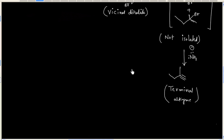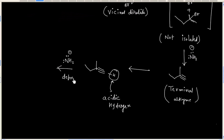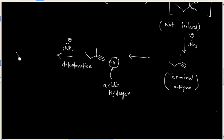In case of terminal alkyne, we have acidic hydrogen, so this acidic hydrogen gets deprotonated by a strong base to give acetylide ion.